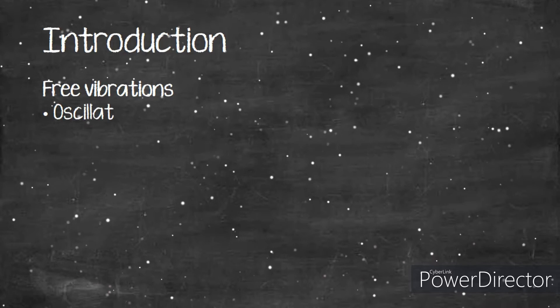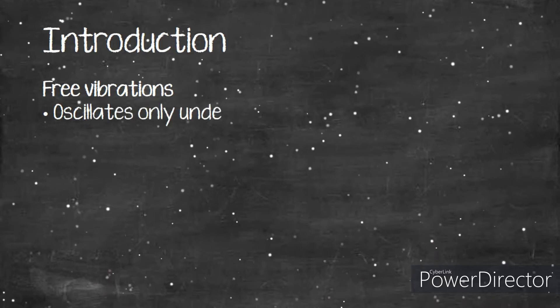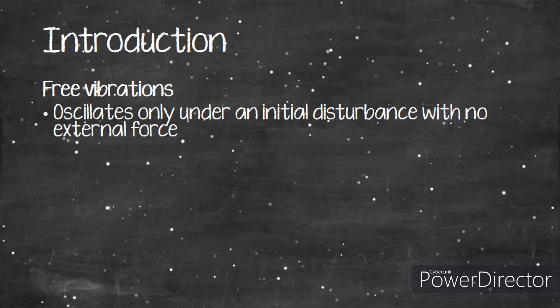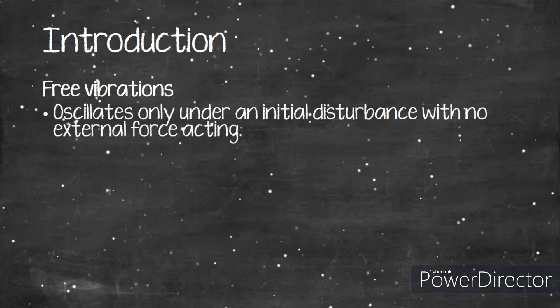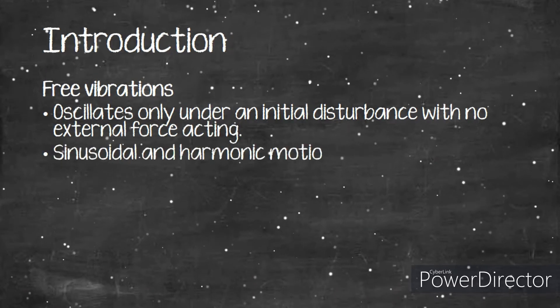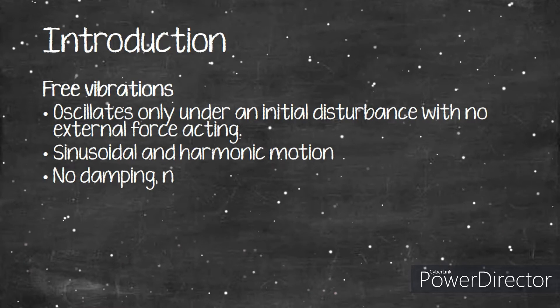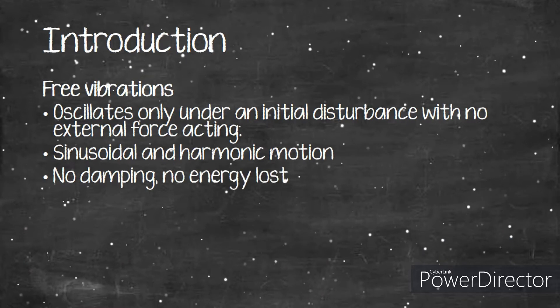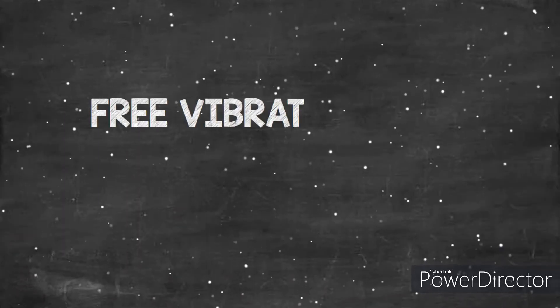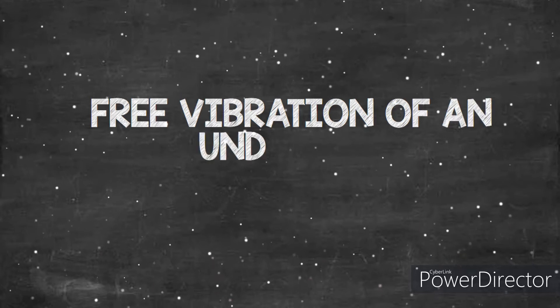Free vibration means a system oscillates only under an initial disturbance with no external force acting on it. It remains in motion with no damping and no energy loss. For example, a pendulum system where we only give energy at the initial state and let it move freely.